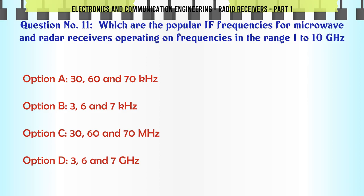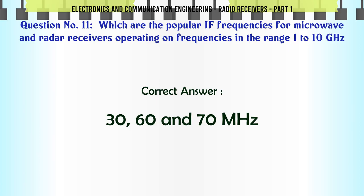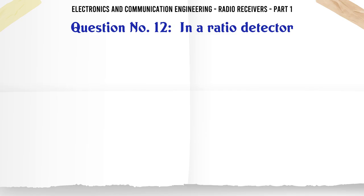Which are the popular IF frequencies for microwave and radar receivers operating on frequencies in the range 1 to 10 GHz? a. 30, 60, and 70 kHz. b. 3, 6, and 7 kHz. c. 30, 60, and 70 MHz. d. 3, 6, and 7 GHz. The correct answer is 30, 60, and 70 MHz.